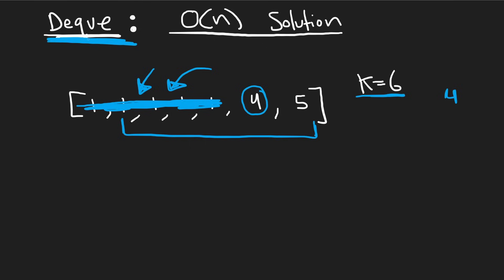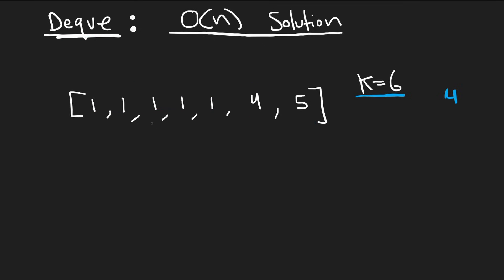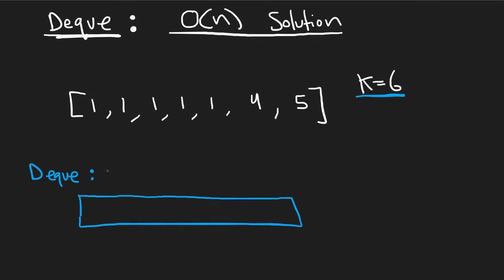The data structure we're going to use to eliminate these values is a deque (DQ). To repeat: if we have a window and we see a value that's greater than previously seen values in our window, we can eliminate those smaller values. What you're going to notice is that the values in our deque are always going to be in decreasing order.